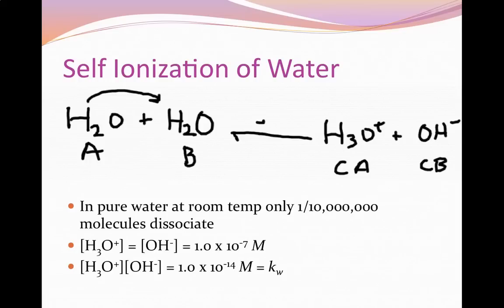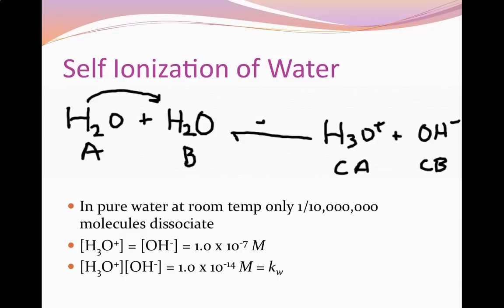The reverse reaction is much more prevalent than the forward reaction, because we have a whole lot more water than we have of the hydronium and hydroxide ions — which is a really good thing, because we survive off of water and not hydronium and hydroxide. In pure water at room temperature, 1 in 10 million molecules dissociate. It's a dynamic system, so those that change are going to change back, and others will continue forming hydronium and hydroxide.